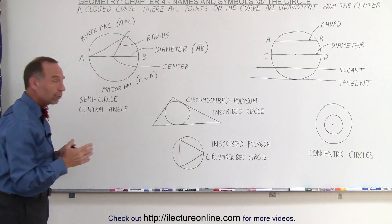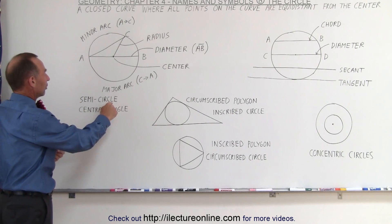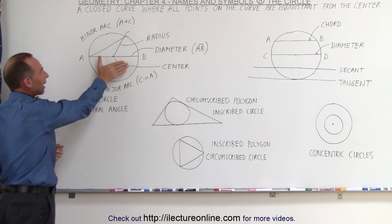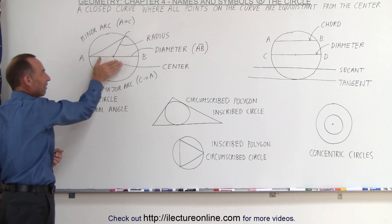Now we can also have some other words here that we should know or be familiar with, called the semicircle. If we draw a line like here from A to B and it goes to the center, then we have the circle divided into two what we call semicircles or half circles.